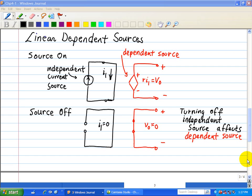Dependent sources cannot be turned on and off individually because they depend on the input excitation supplied by independent sources.